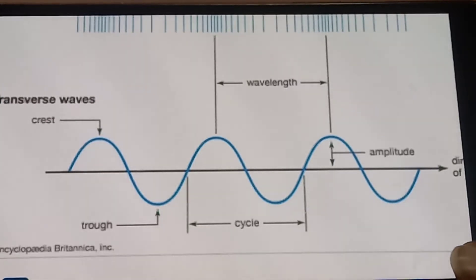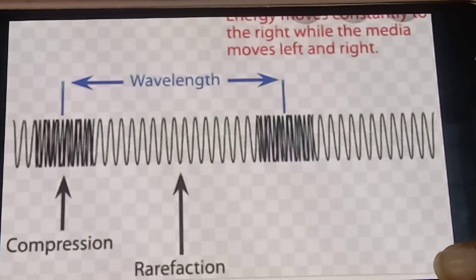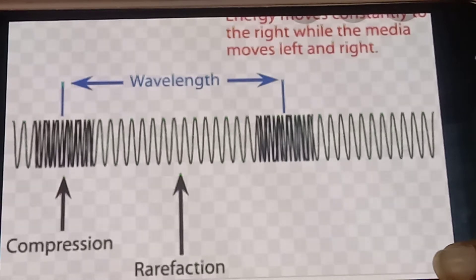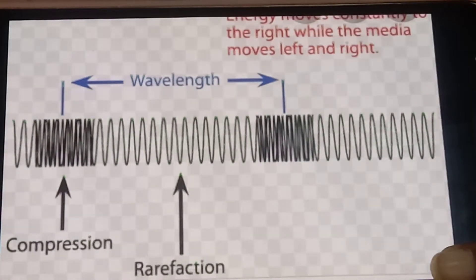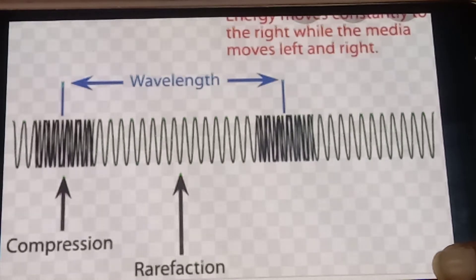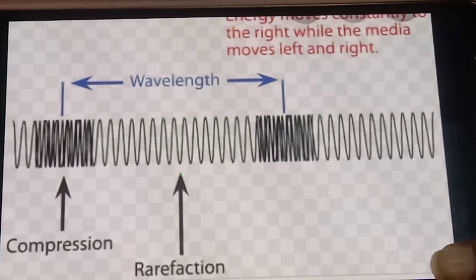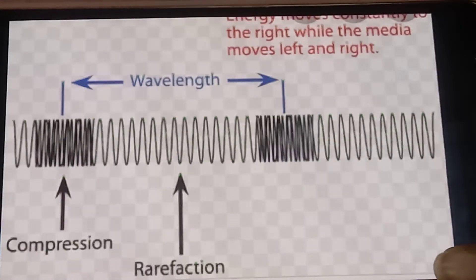In longitudinal waves, the particles of the medium vibrate in a direction which is parallel to the direction of propagation of the wave. Examples include waves in a spring and sound waves in a medium. Longitudinal waves are produced in solids, liquids, and gases — whereas transverse waves occur only in solids and liquids.